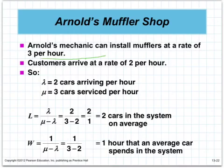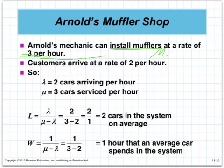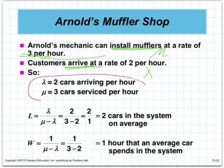At Arnold's Muffler Shop, customers arrive at a rate of 3 per hour. When you read your question, you're going to have to identify two things: lambda and mu. Arnold can install mufflers at a rate of 3 per hour — that is your mu, that is the service being performed. The customers arrive at a rate of 2 per hour — arrive is your lambda. So lambda is 2 cars per hour and mu is 3 per hour, both in the same time period.